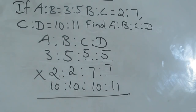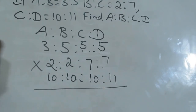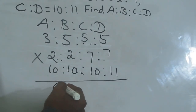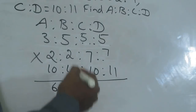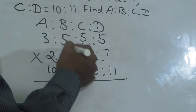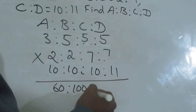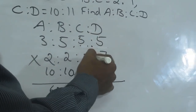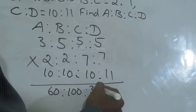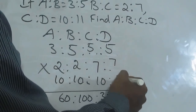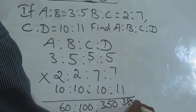Once you multiply, what you will get? 3 into 2 into 10: 3 into 2 is 6, 6 into 10 is 60. 5 into 2 into 10: 5 into 2 is 10, 10 into 10 is 100. 5 into 7 is 35, 35 into 10 is 350. 5 into 7 is 35, 35 into 11 is 385.